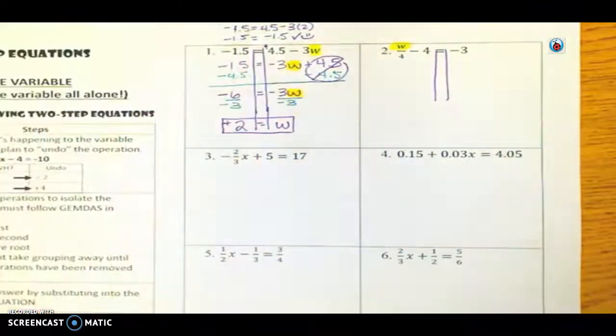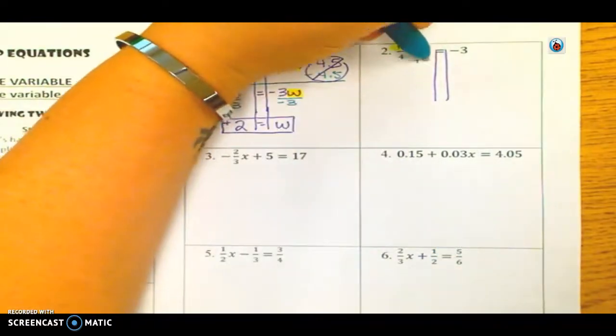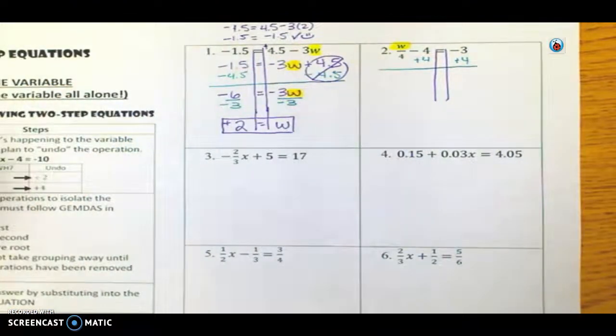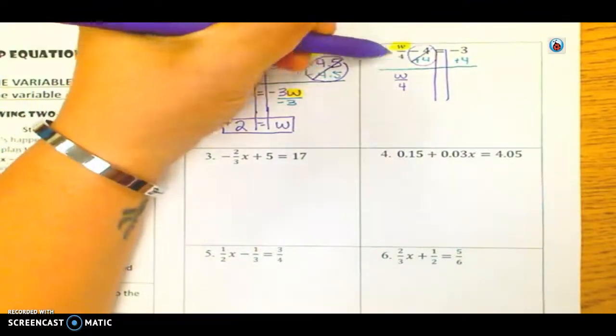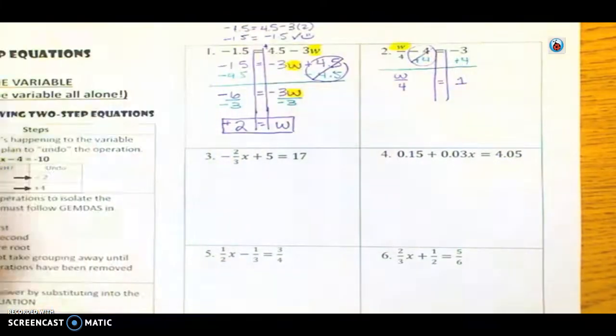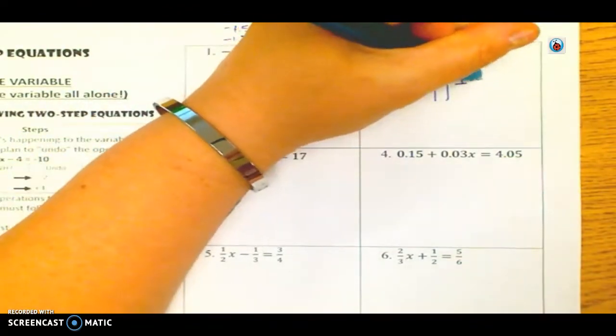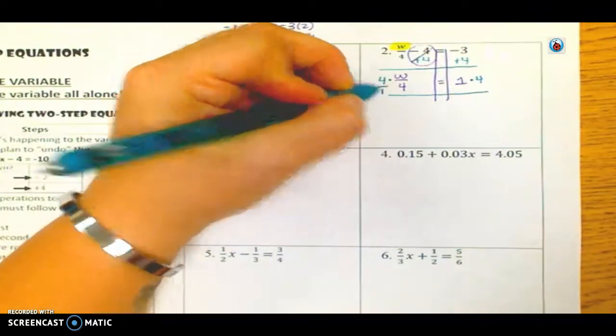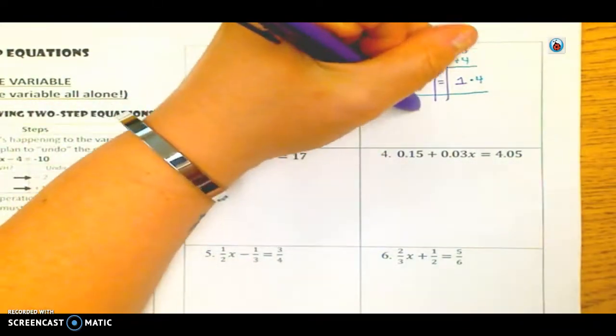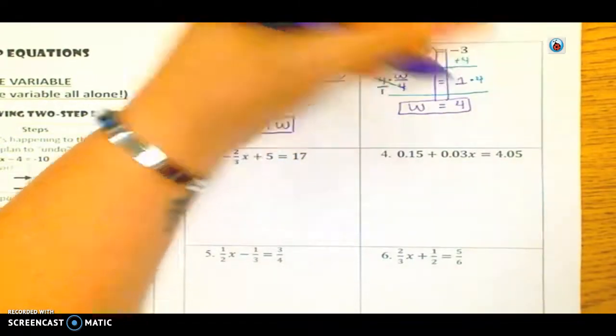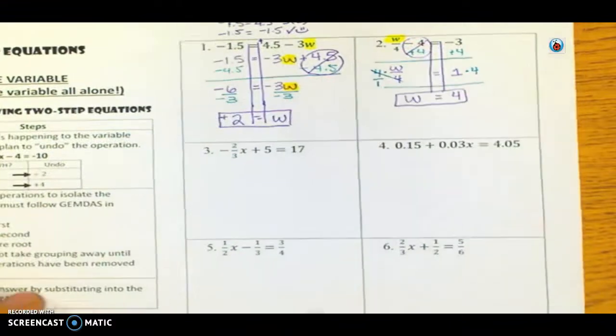So again, here is my variable. And I see that I'm dividing my variable by 4 and I'm subtracting 4. So I'm going to undo the subtracting first by adding 4 to both sides. And then I always bring down what I have not done. So these guys cancelled out because they made a zero pair. So I brought down the W divided by 4 equals 1. Now I'm dividing by 4. So I want to multiply both sides by 4. And basically, that's what I'm doing. I'm multiplying by that reciprocal. So it's 4 over 1. So when we do that, those cancel each other out. And we get W equals 4. And if I plug that back in, 4 divided by 4 is 1. And 1 minus 4 does give me negative 3. So I know that I did it correctly.